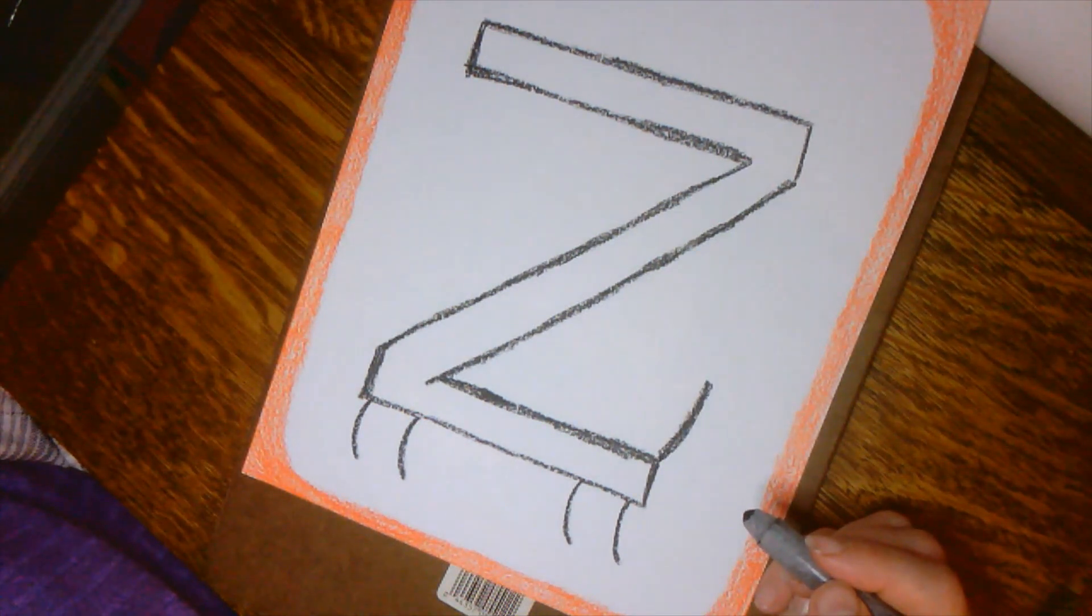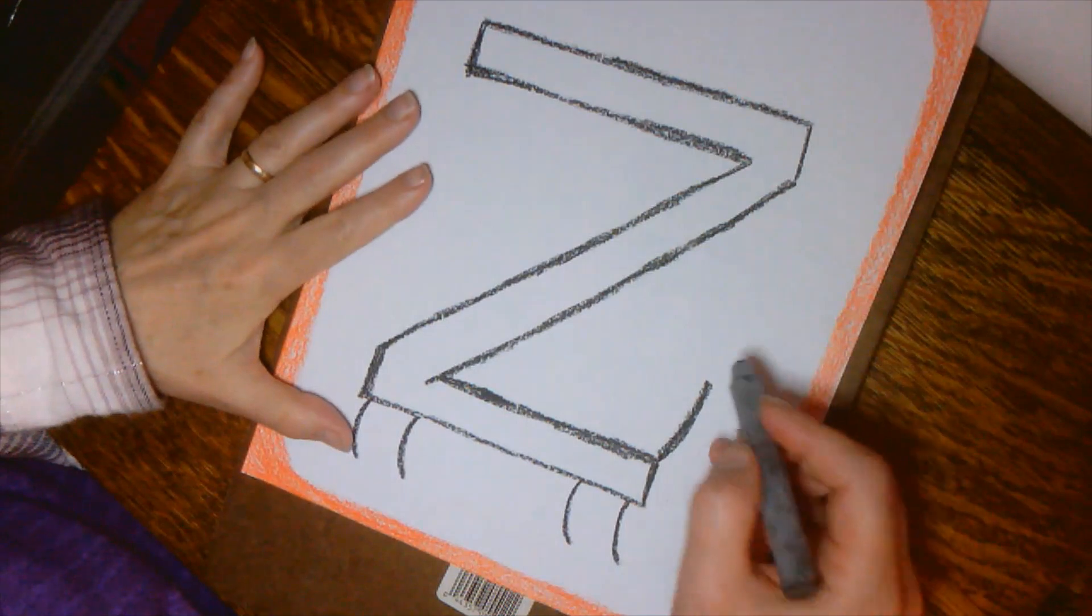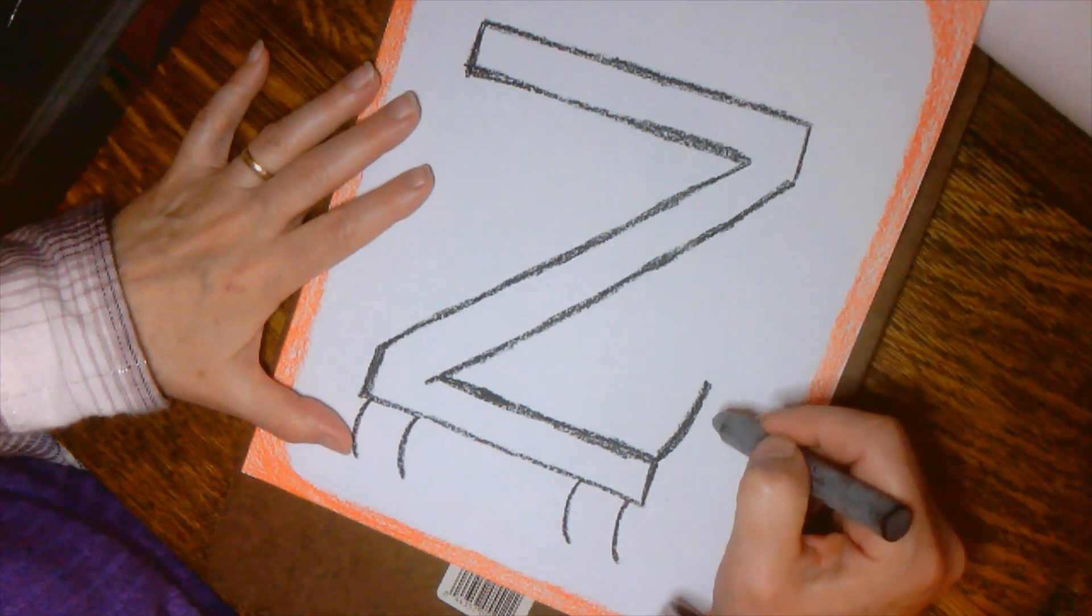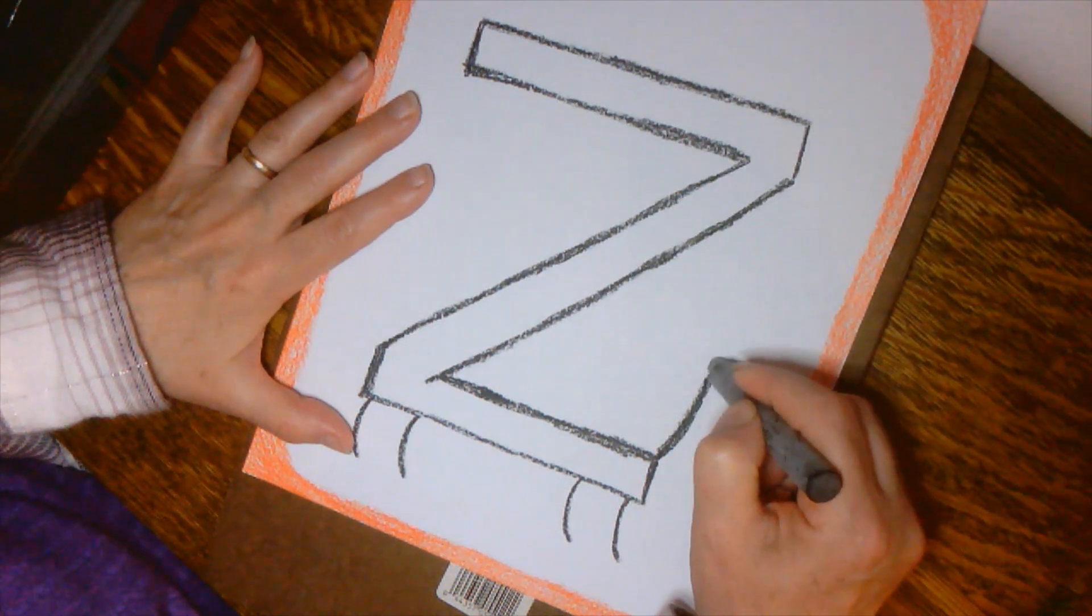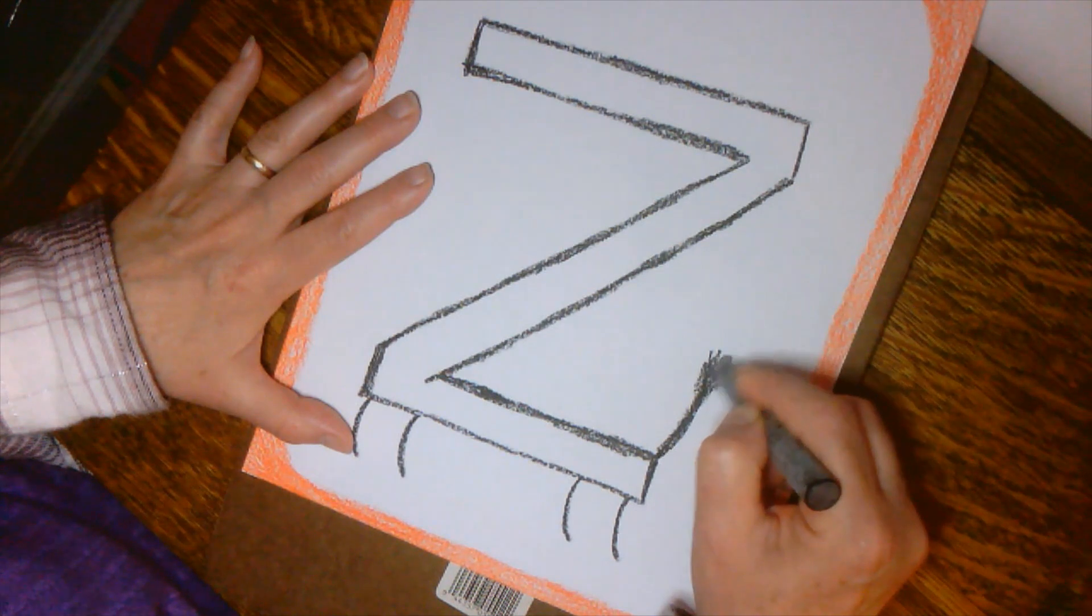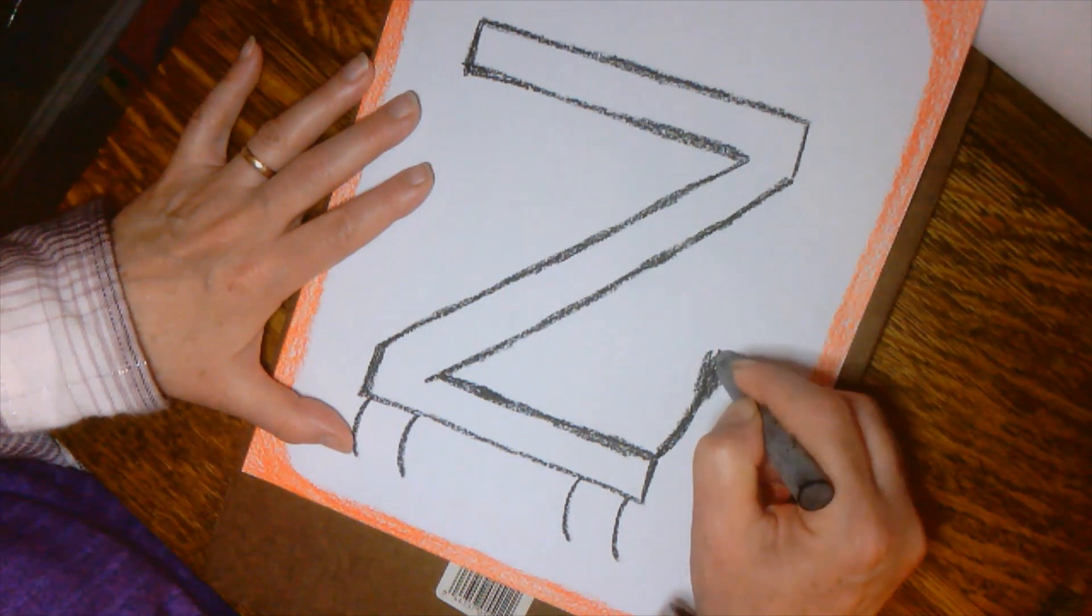Now zebras they don't have long fluffy tails like horses, instead they have it's kind of like a skinny piece and then fluff at the end more like a donkey. So I have my skinny tail here and then here's the fluffy end of it.